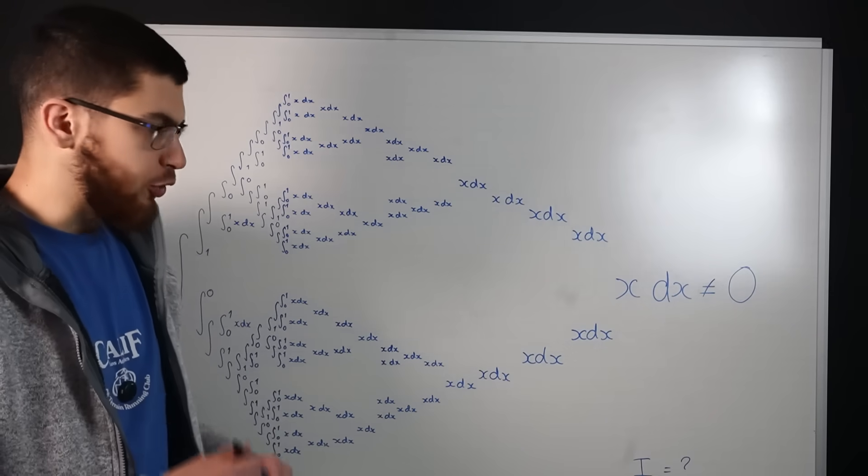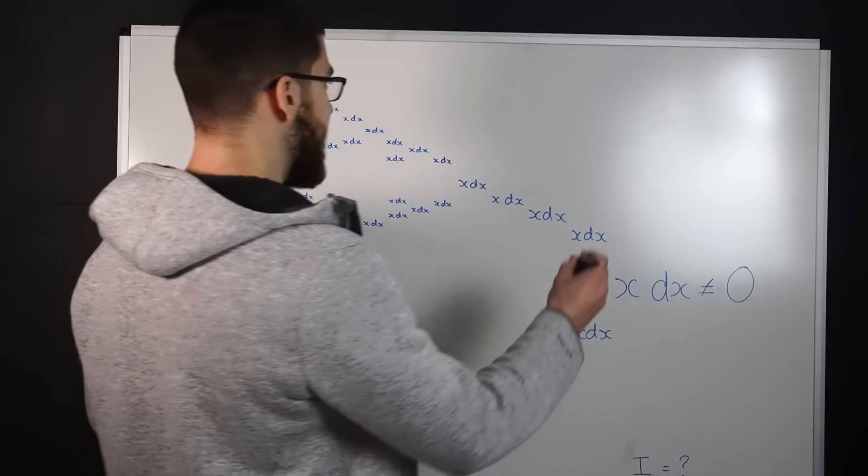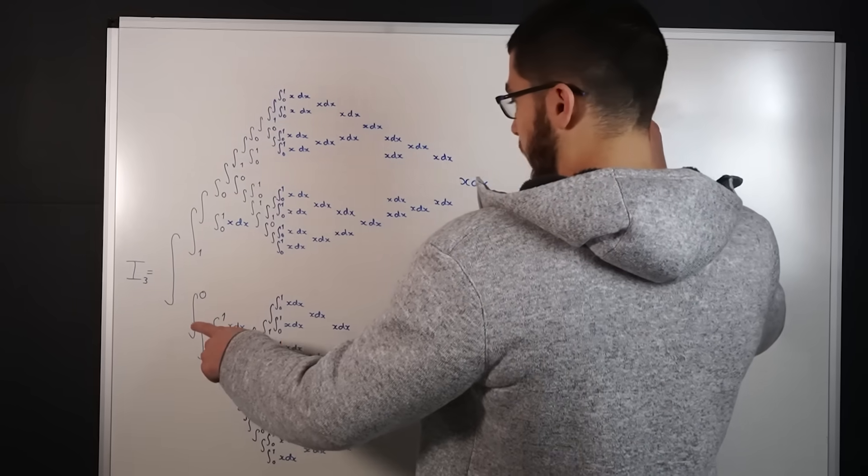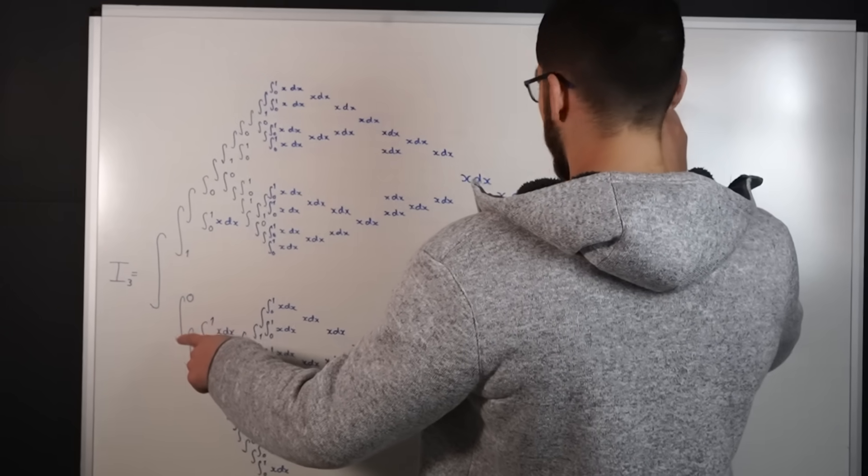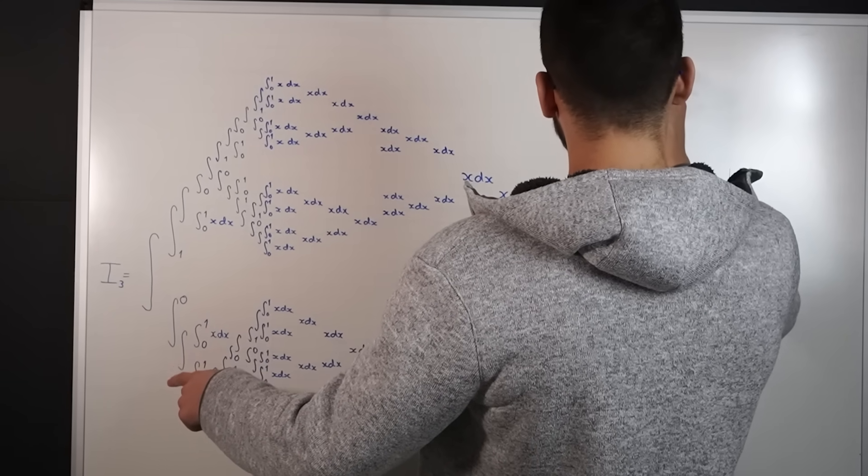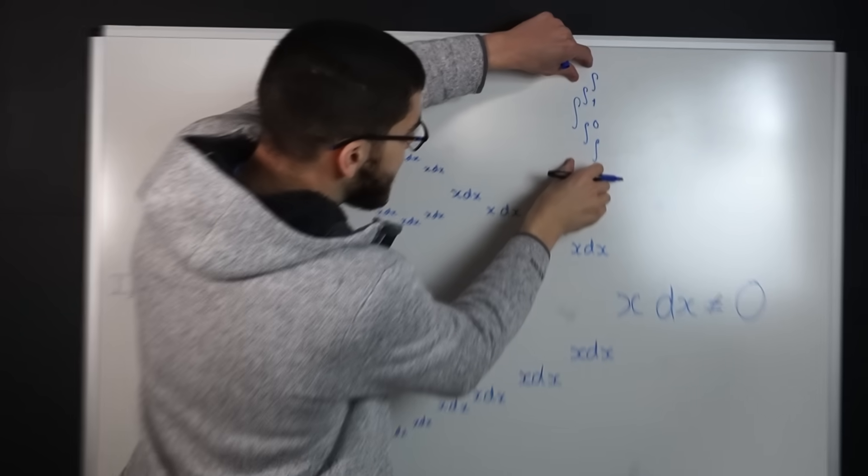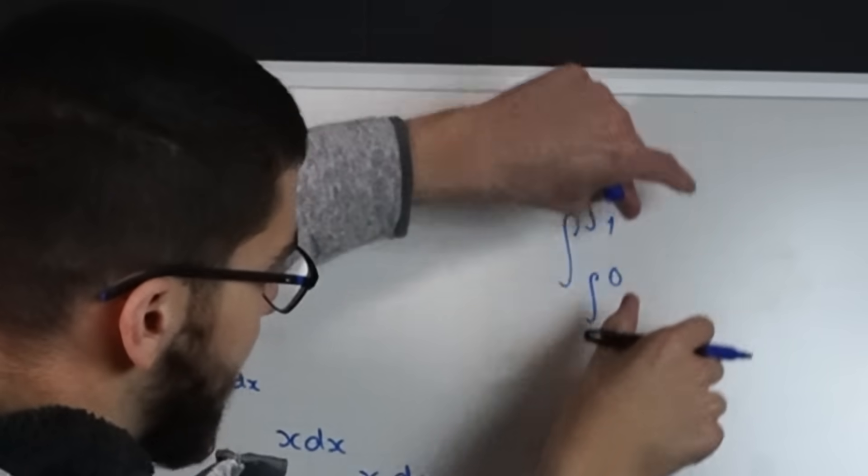So let's try to construct the smallest possible Sapinski integral. If we start with the first three lines we've got integral, integral, integral, integral, zero, one, integral, then we're going to copy this entire thing into here and here.